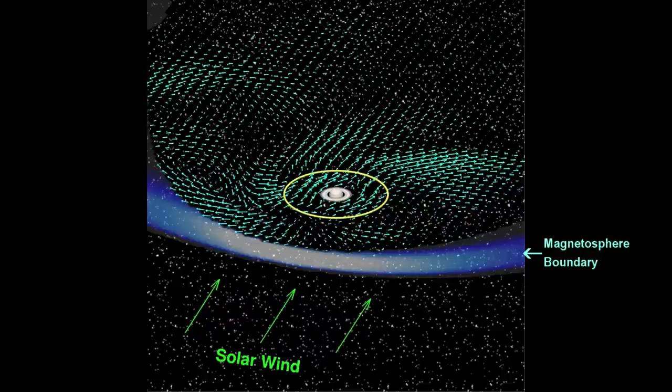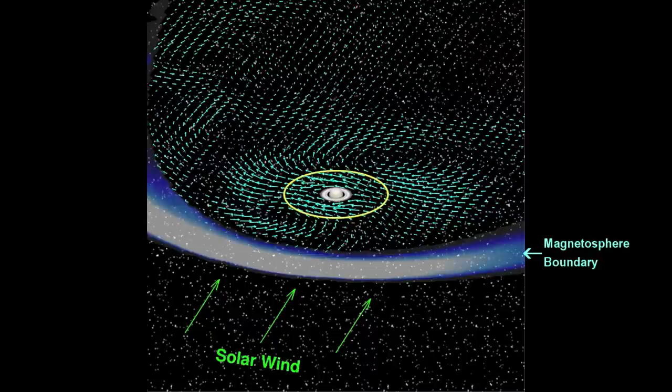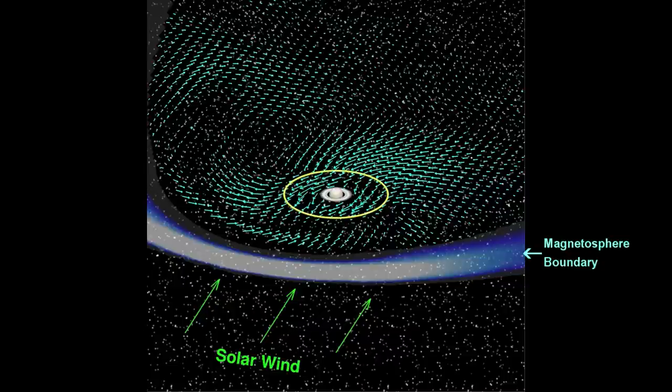The magnetosphere breathes in and out as Saturn's rotating magnetic field pushes against the magnetosphere boundary. When the field is stronger, the magnetosphere breathes out. When the field is weaker, the magnetosphere breathes in.